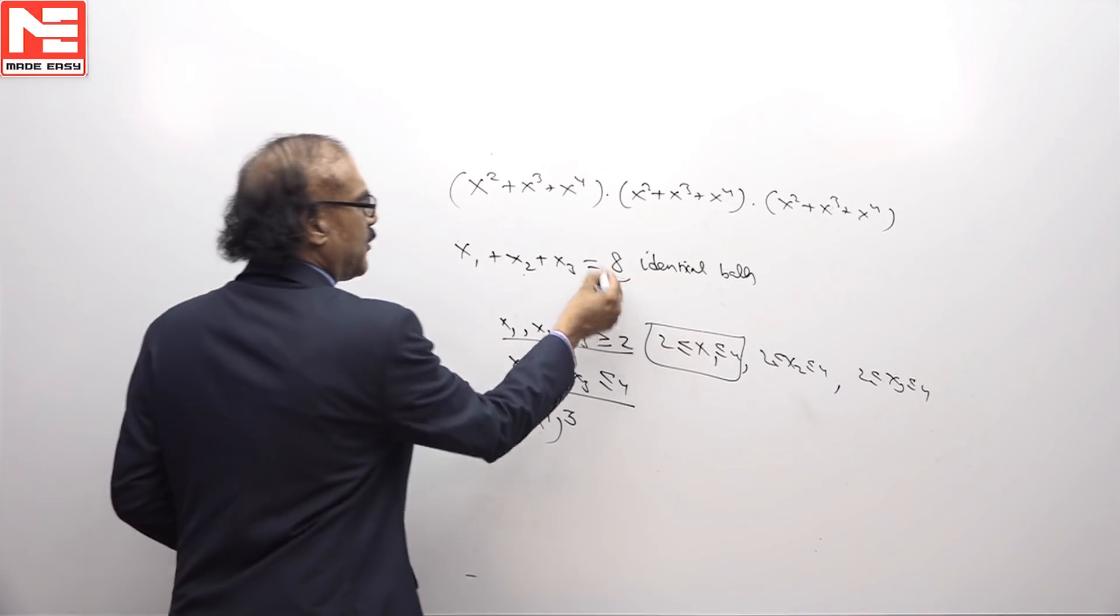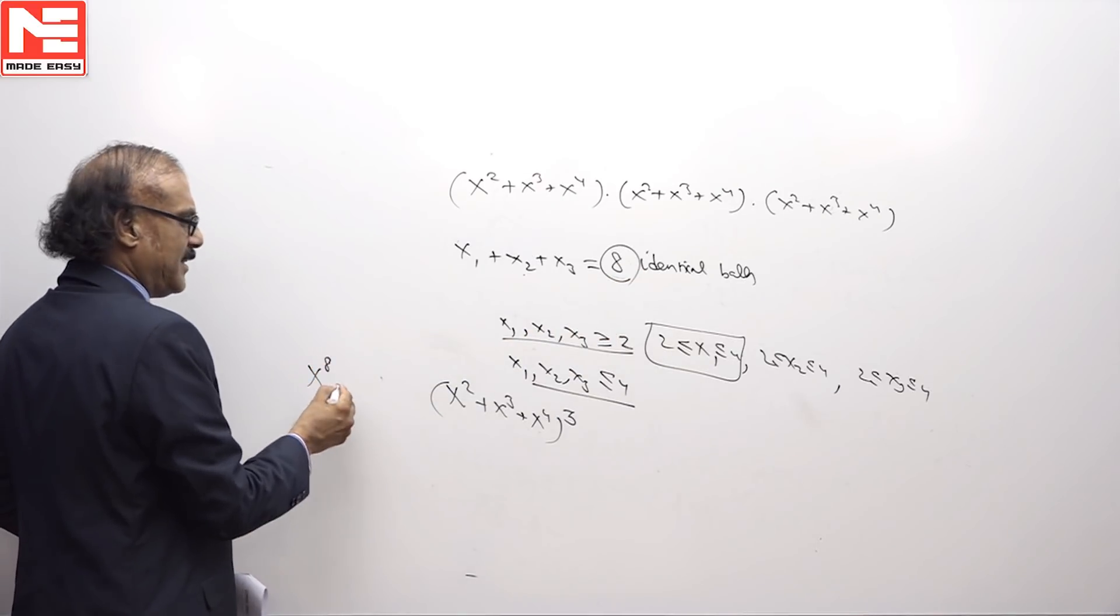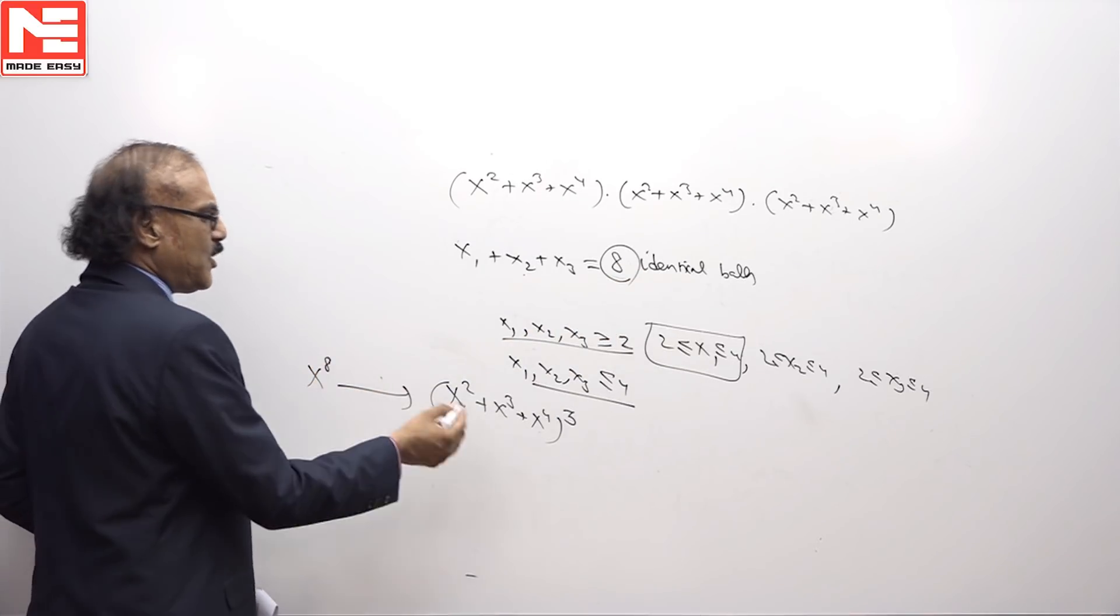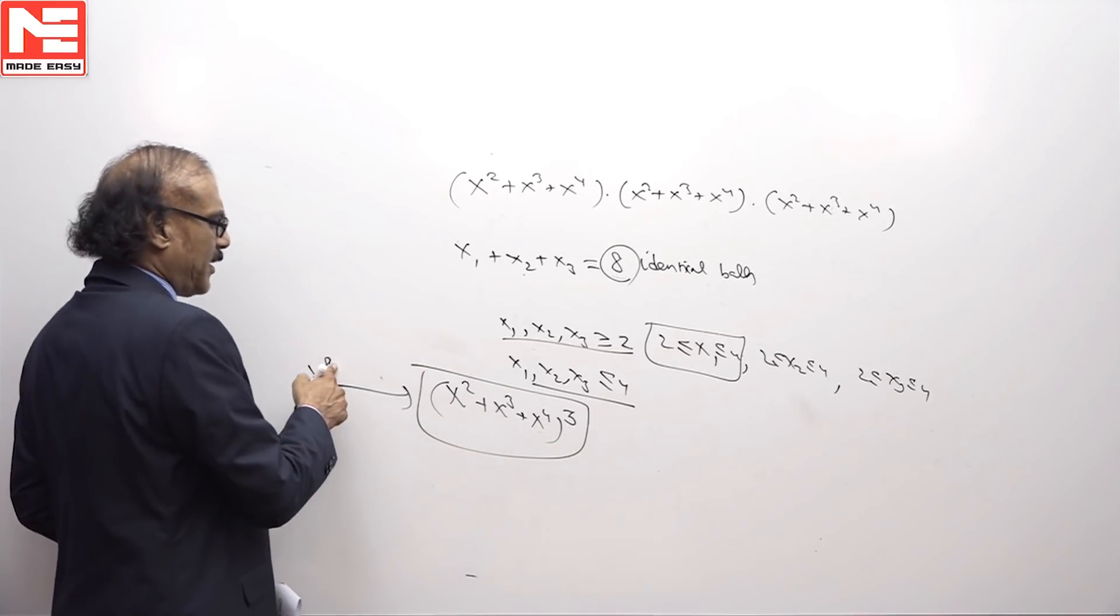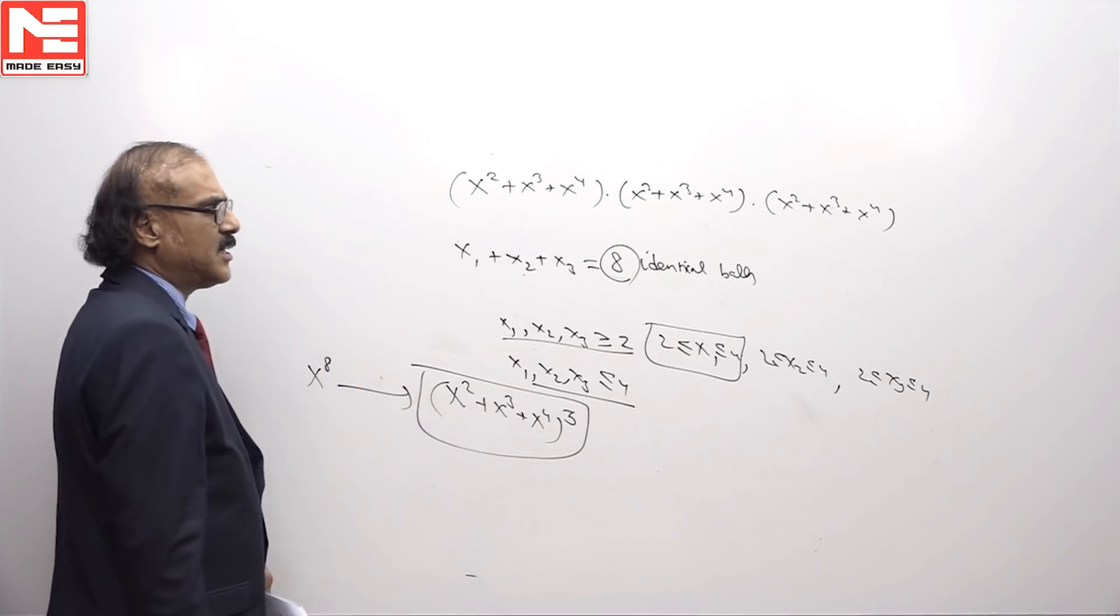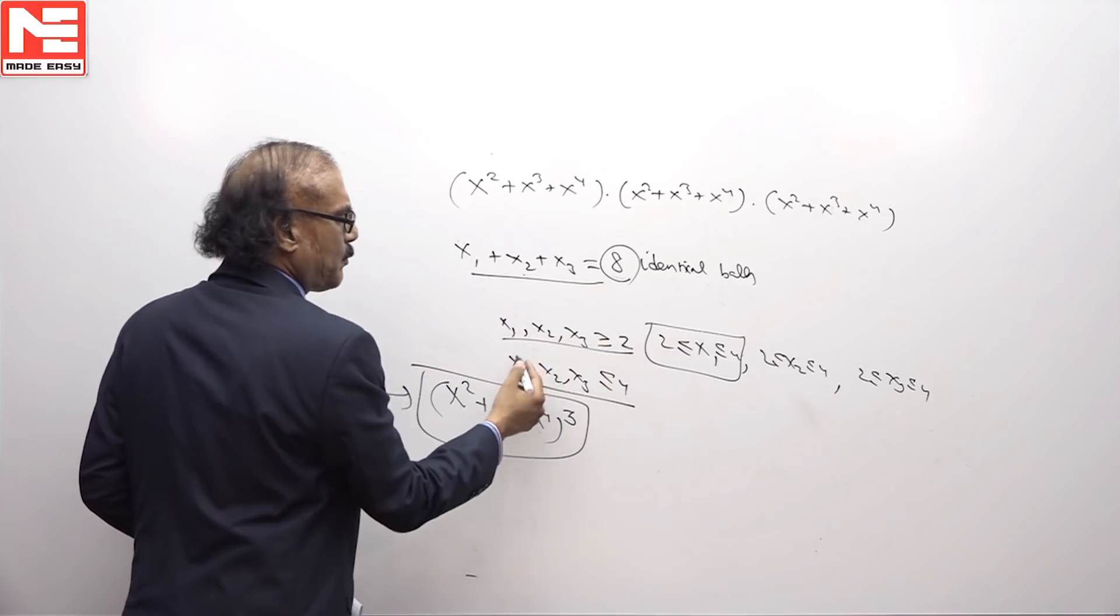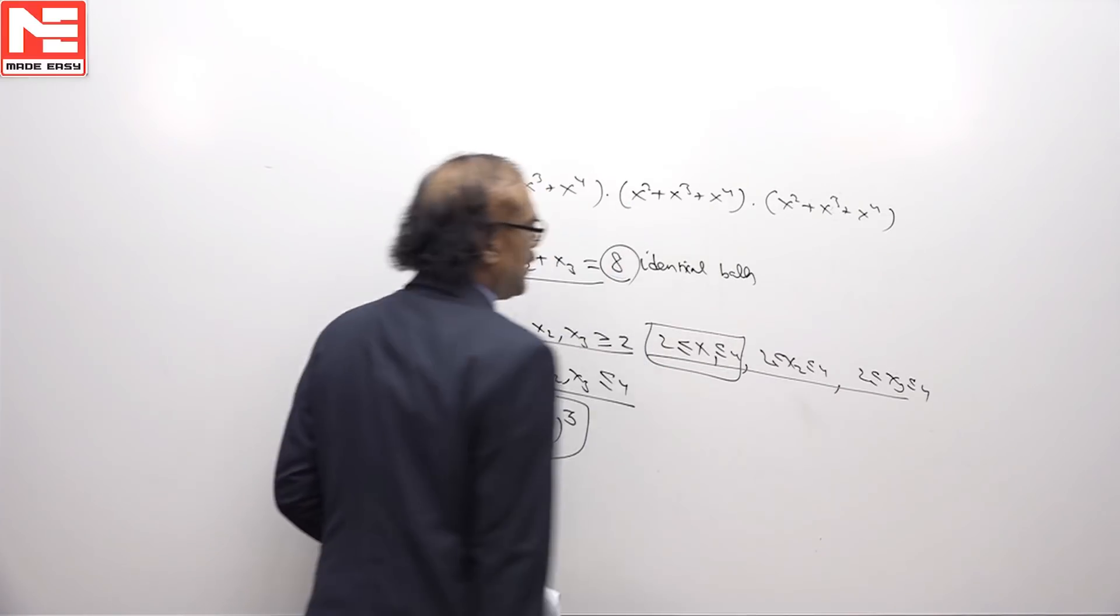We need to find the coefficient of x to the power of 8, that is the right hand side. We need to find the coefficient of x to the power 8 in this generating function, that will be the answer to this problem subject to this constraint.